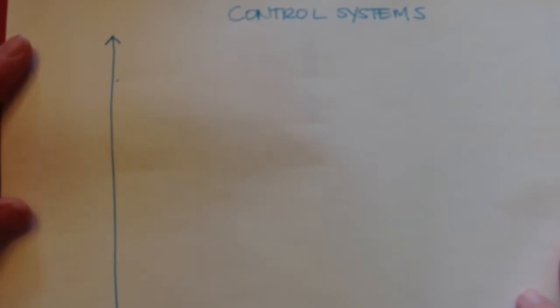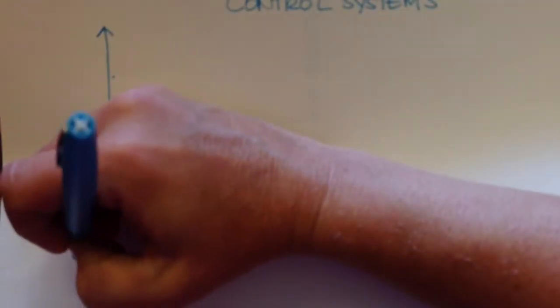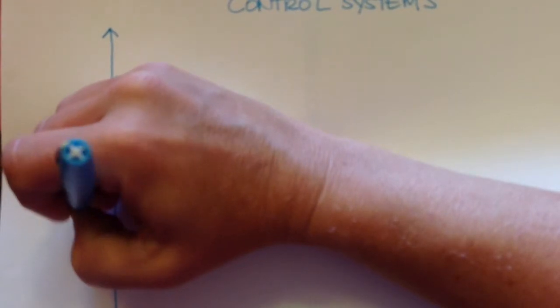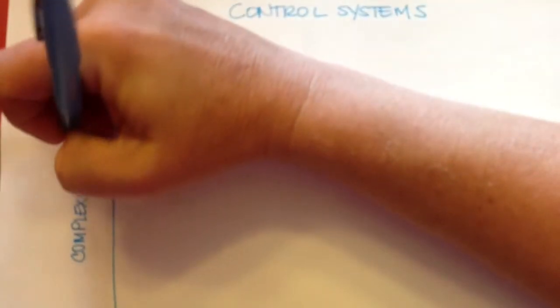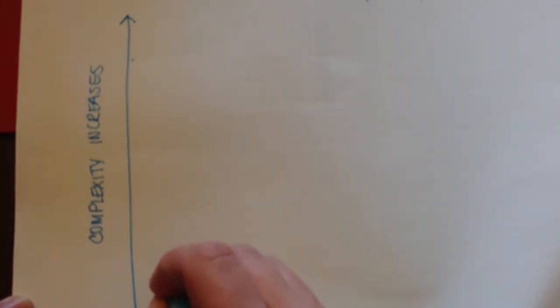So now let's look a little bit at what this looks like. If we kind of make a chart here of control systems and we say that the complexity increases as we go up.